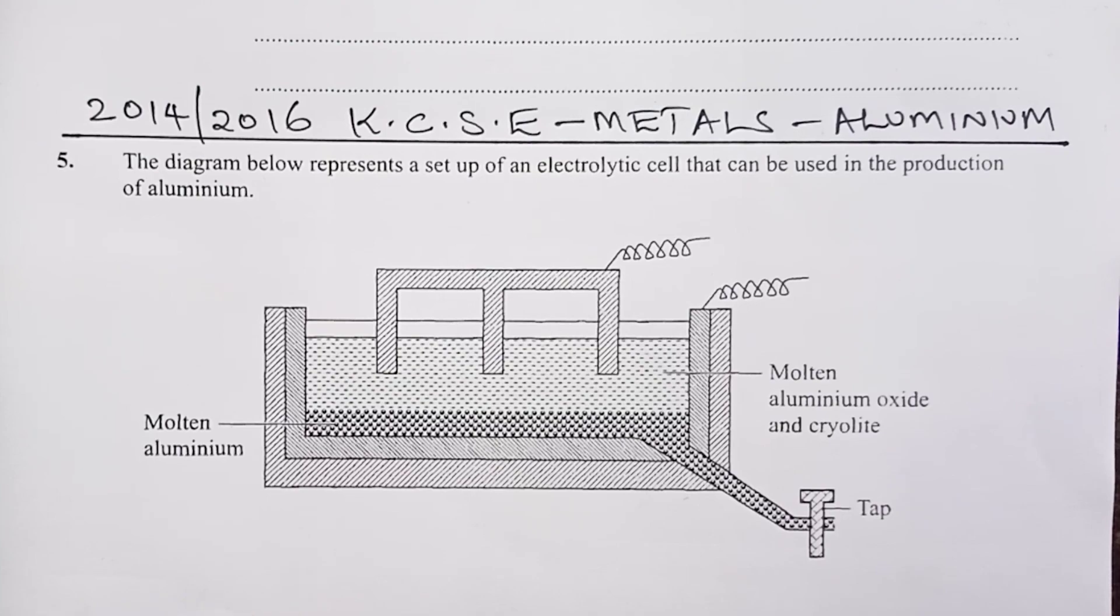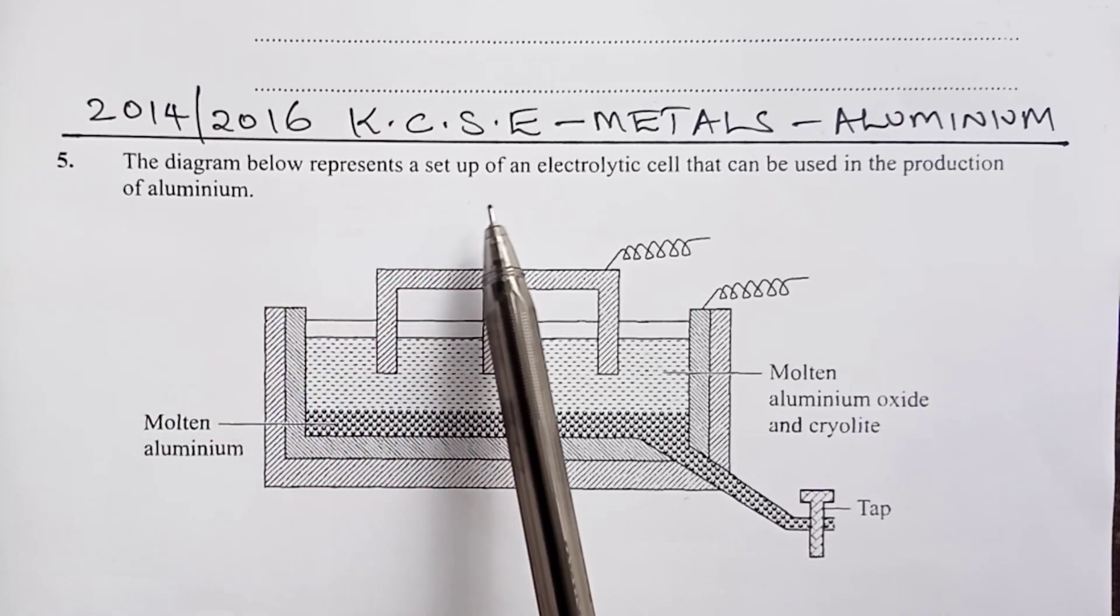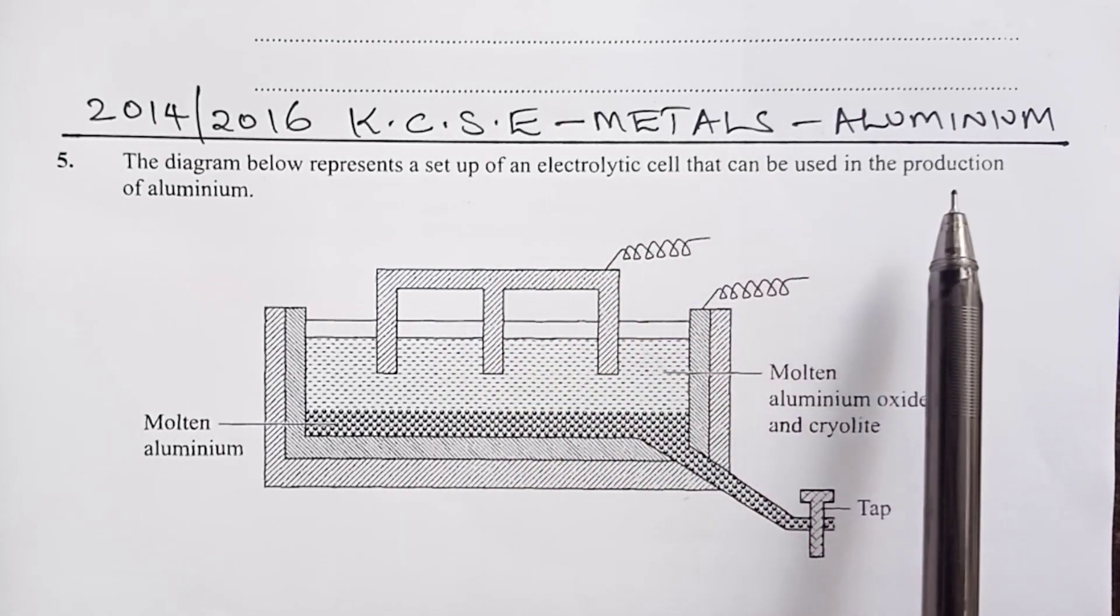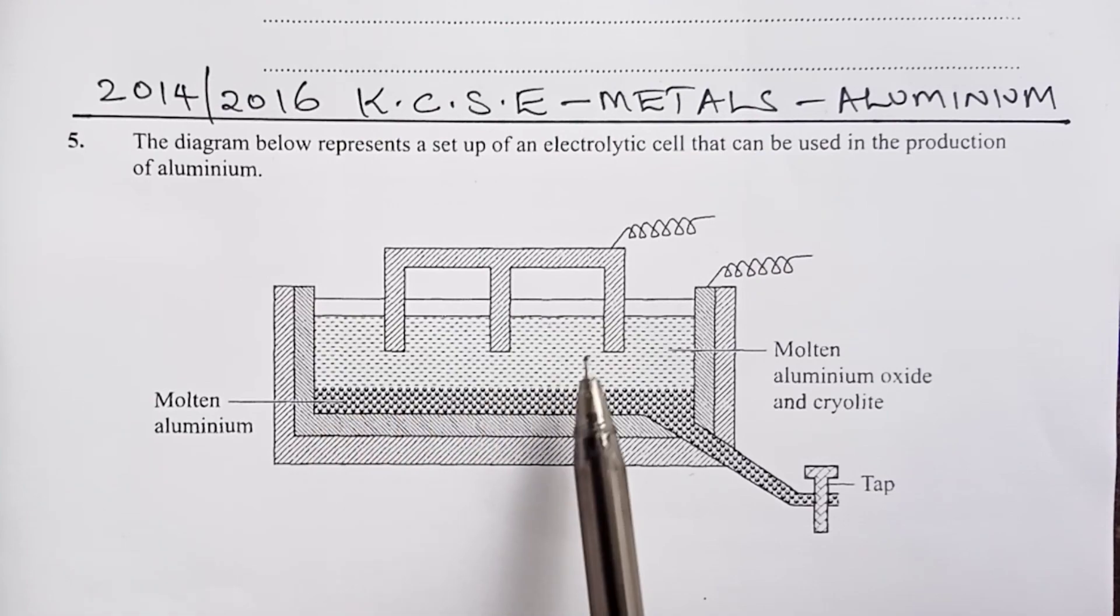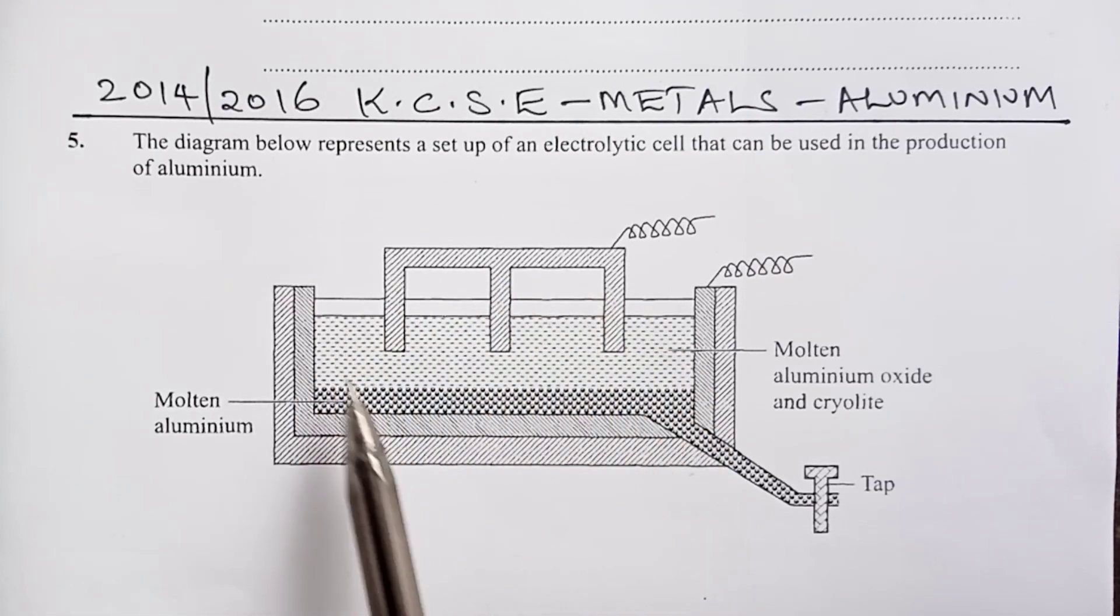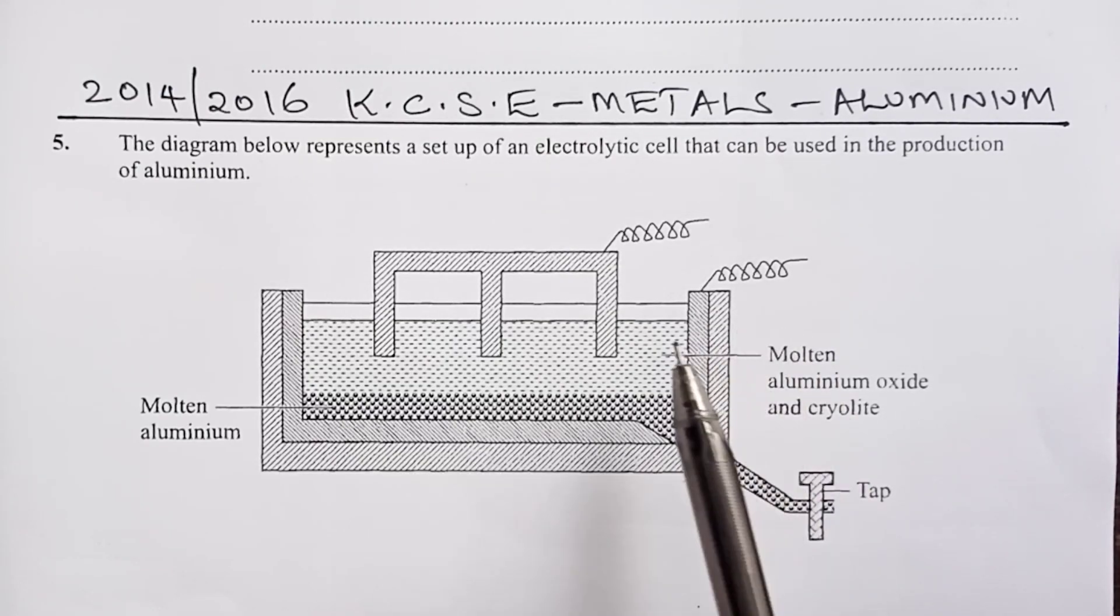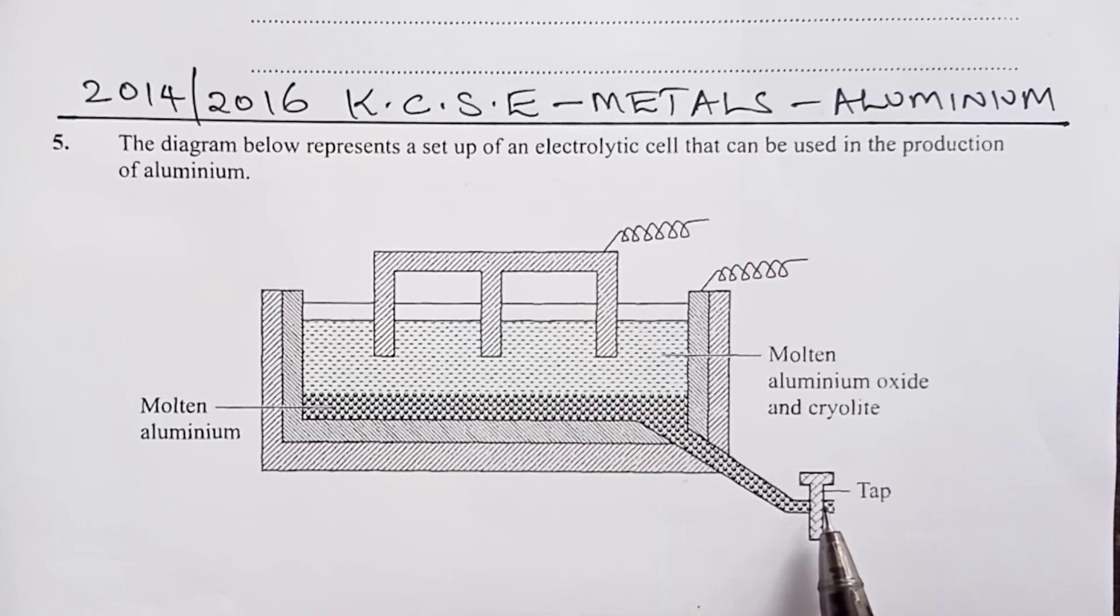Welcome and be with us till the end of the video. The diagram below represents a setup of an electrolytic cell that can be used in the production of aluminum metal. Here is our electrolytic cell. We have our cathode being the inner lining and then we have anode up here. And then on the far right, we have a tap through which molten aluminum leaves.